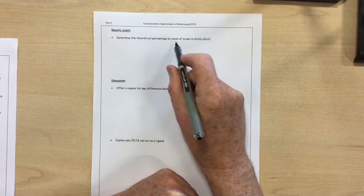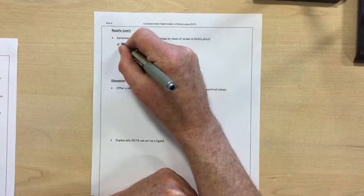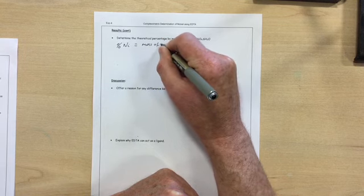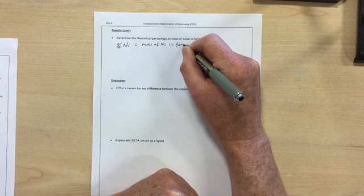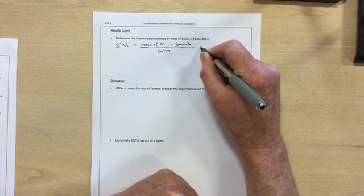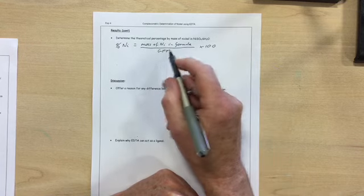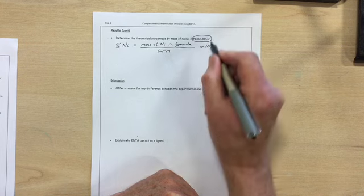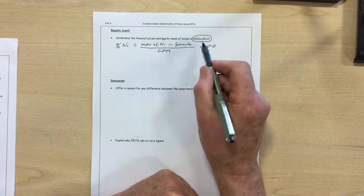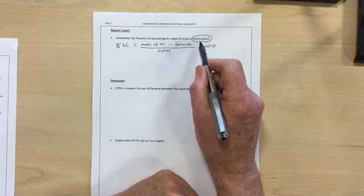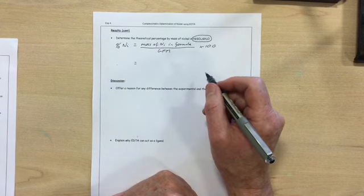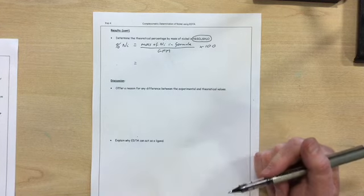When determining the theoretical percentage by mass of nickel in the nickel sulphate, you're going to use the equation: percentage of nickel equals mass of nickel in the formula, which would be 58.7, over the gram-formula mass times 100. Now it's important when you're working out the gram-formula mass that you take into account the six moles of water molecules that are contained within the hydrated nickel salt. So your gram-formula mass will be the nickel plus sulfur plus four oxygens plus six H2Os. I'll leave you to work that out yourself, compare it with the value you got from your experimental results, and then complete the discussion.